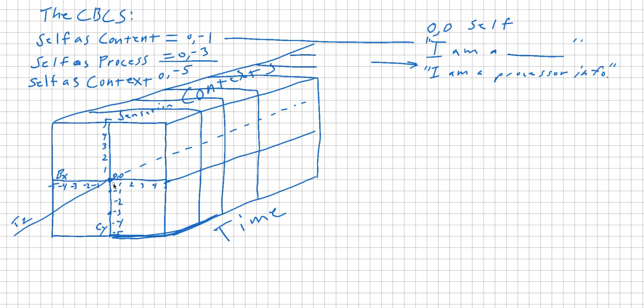Now we have a three-dimensional matrix. And now the self, the 0,0. Remember the 0,0 is also 0,0 here, 0,0 here, 0,0 here. It keeps on going out there to infinity. Well, it's the same as this I. Now we have I am, I am, I am. Okay. But with the self as context, I am a historical being.